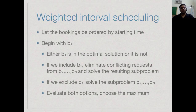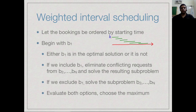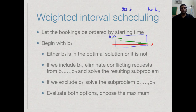Instead of looking at the earliest finishing time, let us look at the earliest starting time and order our requests accordingly. We begin with the first booking b1. In the final answer, either b1 is there or b1 is not there — so we take two options: yes b1 and no b1. If we exclude b1, our sub-problem just consists of b2 onwards — we throw it out and pretend we only had n minus 1 jobs.